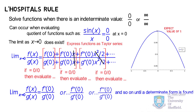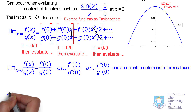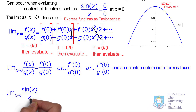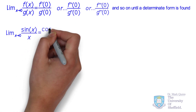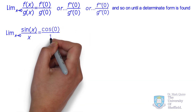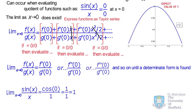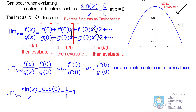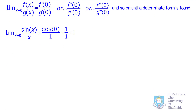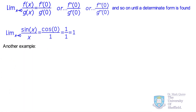Going back to our example of sine x over x, instead of rewriting the full Taylor series expansions for numerator and denominator, we simply evaluate the ratio of the derivatives until we find a determinant value. The derivative of sine x is cosine x, and the derivative of x is 1. As x goes to zero, cosine of zero is 1, and 1 divided by 1 gives us the determinant value of 1 — which matches what we see on the graph.